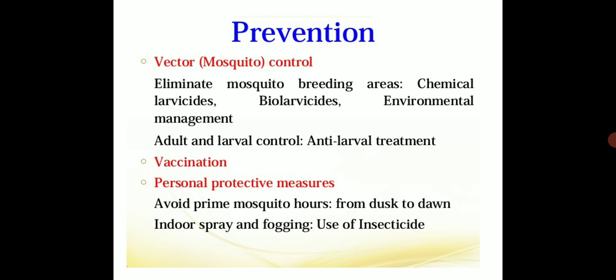Coming to preventive measures: vector control, that is mosquito control. Eliminate mosquito breeding areas by chemical larvicides, bio-larvicides and environmental management. Adult and larval control includes anti-larval treatment, vaccination and personal protective measures. Avoid prime mosquito hours from dusk to dawn.